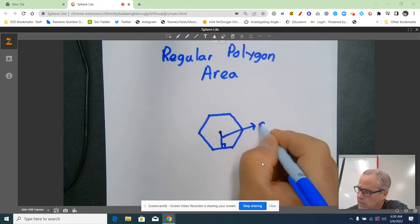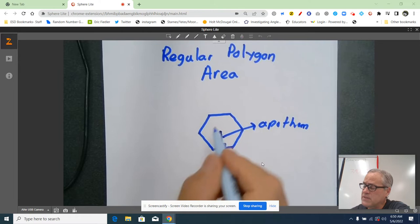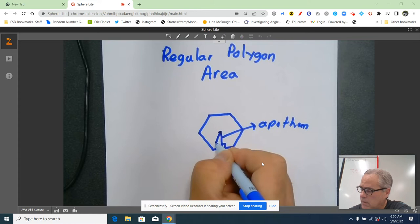A-P-O-T-H-E-M. That's an apothem. The distance from the center to a vertex, for example from here to here, that's called a radius.